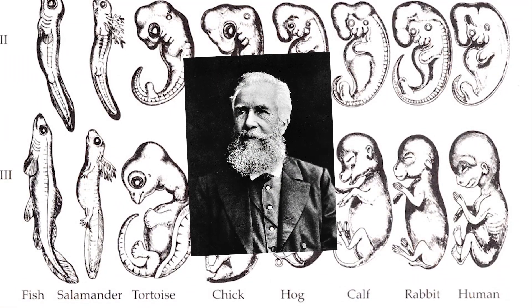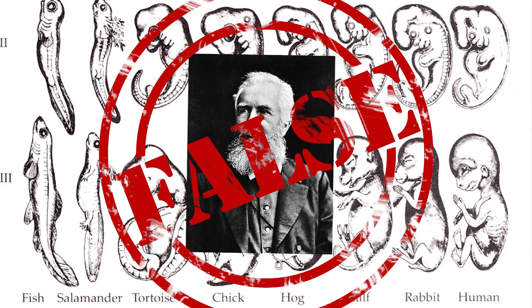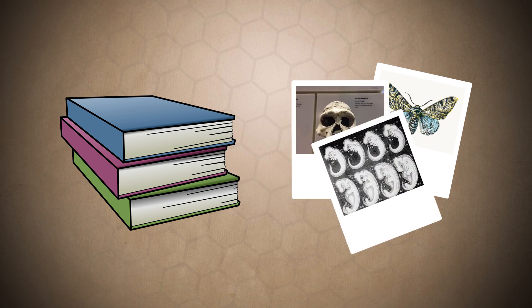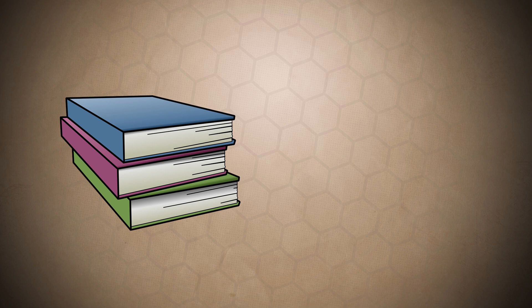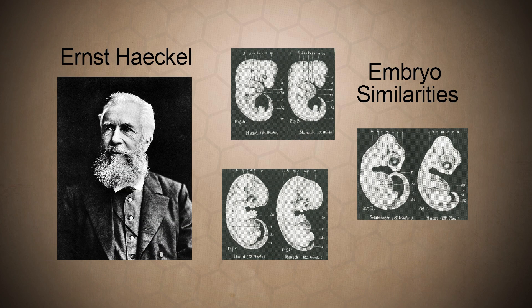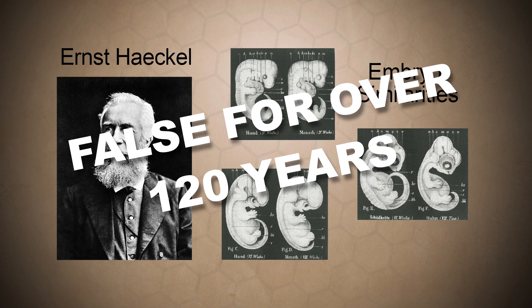Even though Haeckel's ideas were proven false, they're still used to teach evolution today. Why? If you took out everything that we know to be false that's used as evidence for evolution, you wouldn't have much left to teach evolution. Ernst Haeckel and similarity in embryos — we've known that idea is false for 120 years, and yet the majority of science textbooks still use that as evidence to prove evolution. That's evidence that doesn't prove anything other than the theory of evolution is falling on hard times.